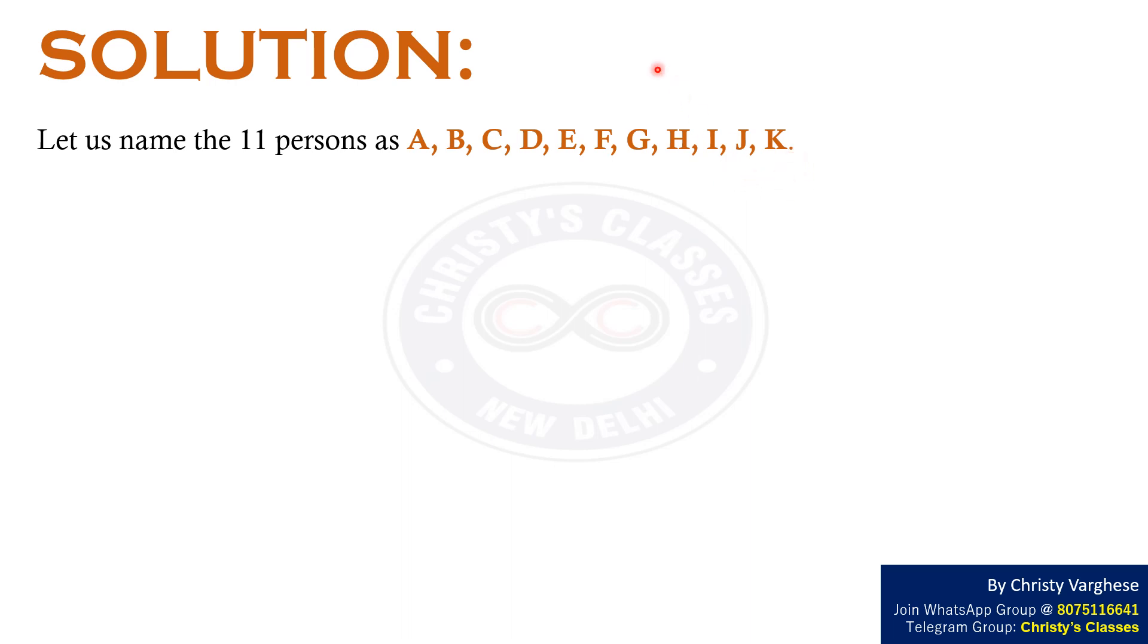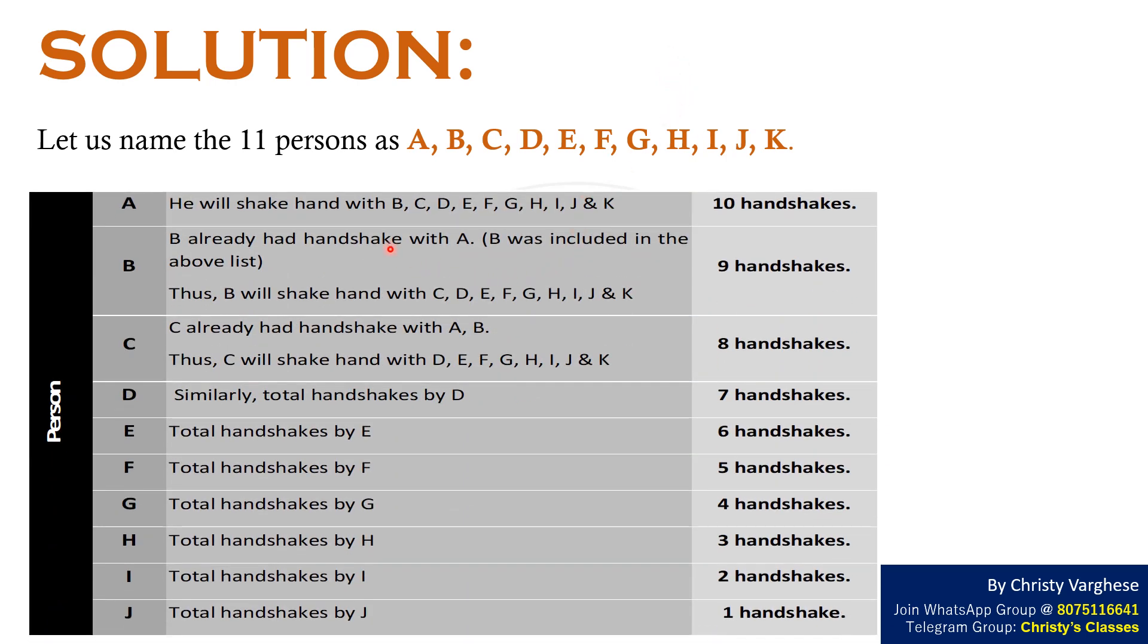It is given that each person shakes hand with every other once and only once. Person A will shake hand with B, C, D, E, F, G, H, I, J and K. That is 10 handshakes.